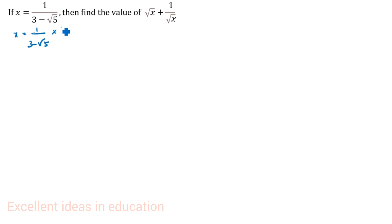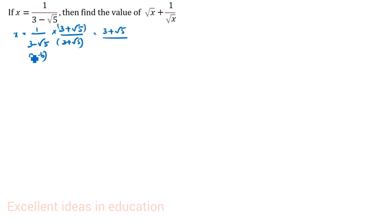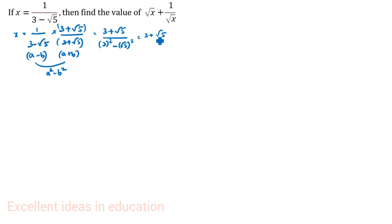Since there is a minus, we multiply by 3 plus root 5 divided by 3 plus root 5. The numerator is 3 plus root 5. For the denominator, we use the a minus b times a plus b formula, which equals a square minus b square. Here a is 3 and b is root 5, so the denominator is 3 squared minus root 5 squared, which is 9 minus 5 equals 4.